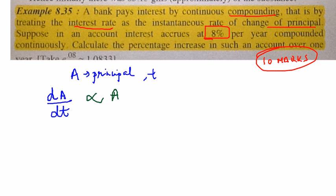So now if we want to remove this proportional sign, we're going to say that dA/dt, the rate at which this principal is going to change, is going to be equal to the product of the amount I have invested in the bank and the rate of interest.